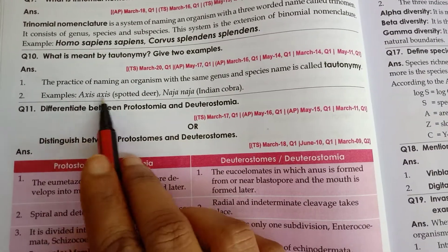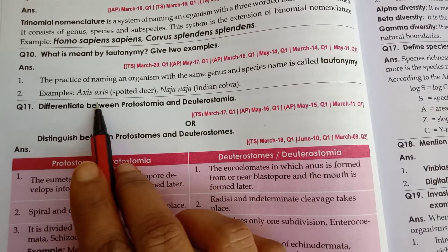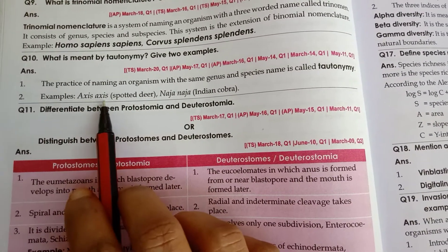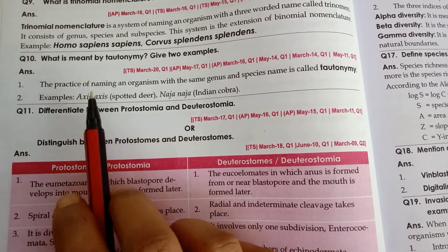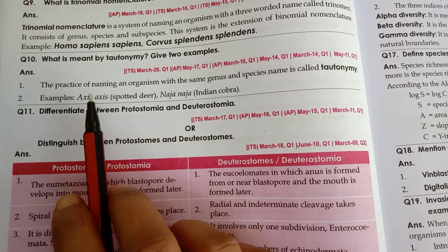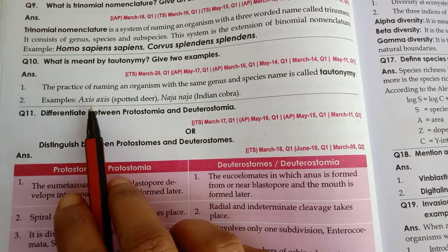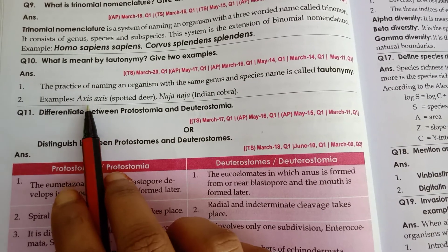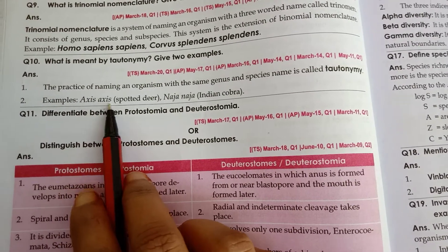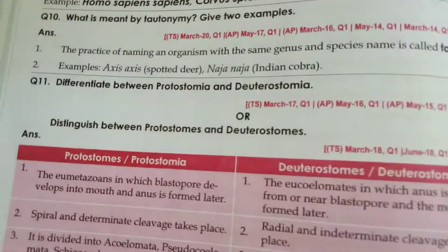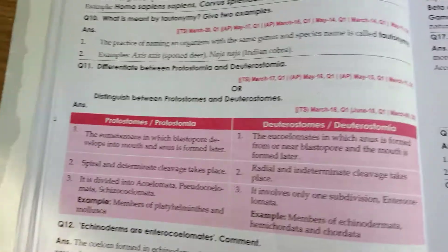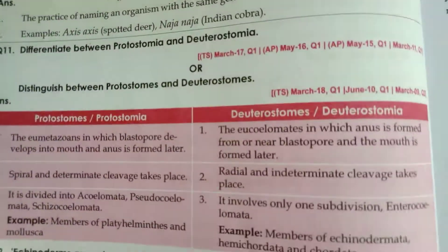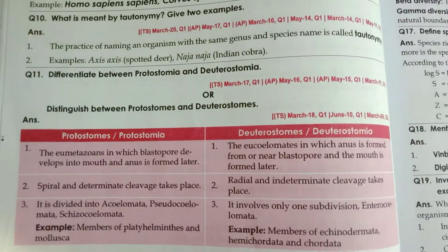So, when the genus and species names of an organism are the same, that practice is called tautonomy. It is the practice of naming an organism with the same scientific name for both genus and species.